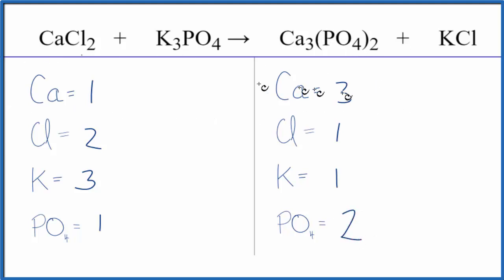Let's balance the calcium atoms first. We could just put a three here. One times three. That would give us three calcium atoms. They would be balanced.